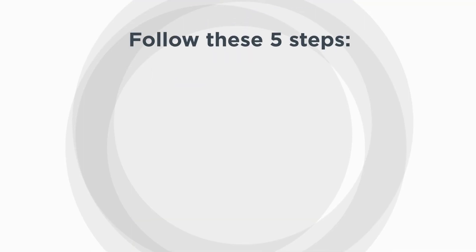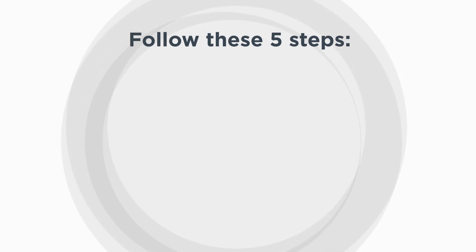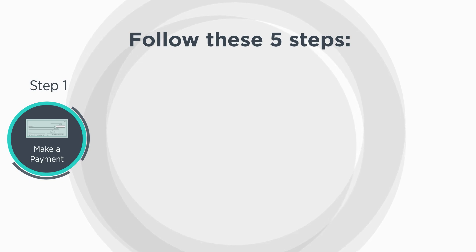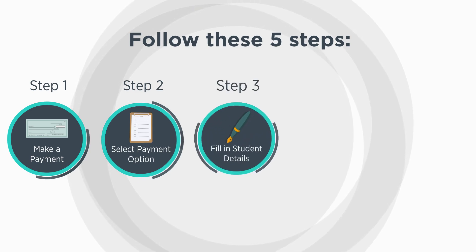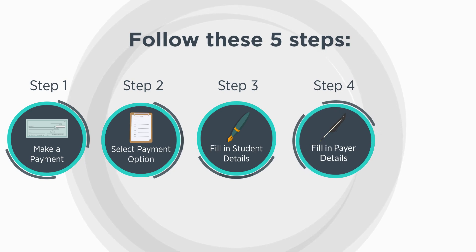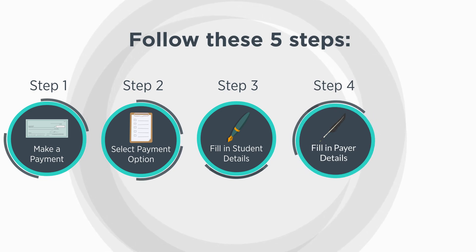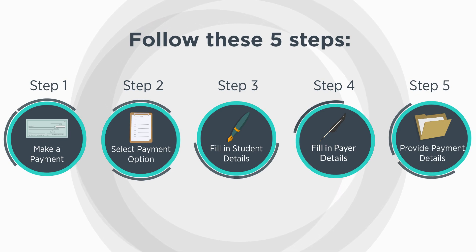To complete your tuition payment, you will need to follow these five steps in the CIBC ISP Portal. Step 1: Make a payment. Step 2: Select a payment option. Step 3: Fill in student details. Step 4: Fill in payer details. Step 5: Provide payment details.